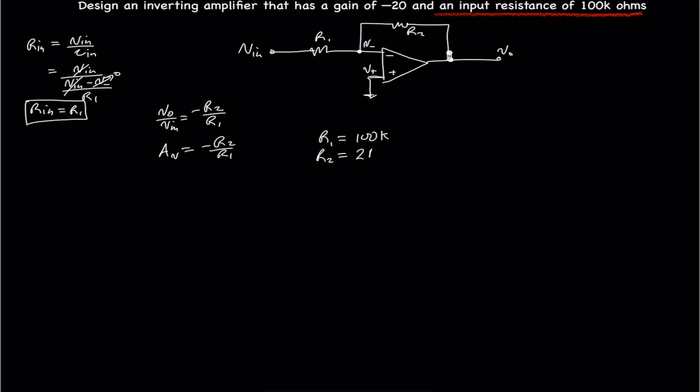And that is equal to 2 kOhms, and that is the end of this problem. So we have an input resistance of 100 kOhms and a gain of negative 20.